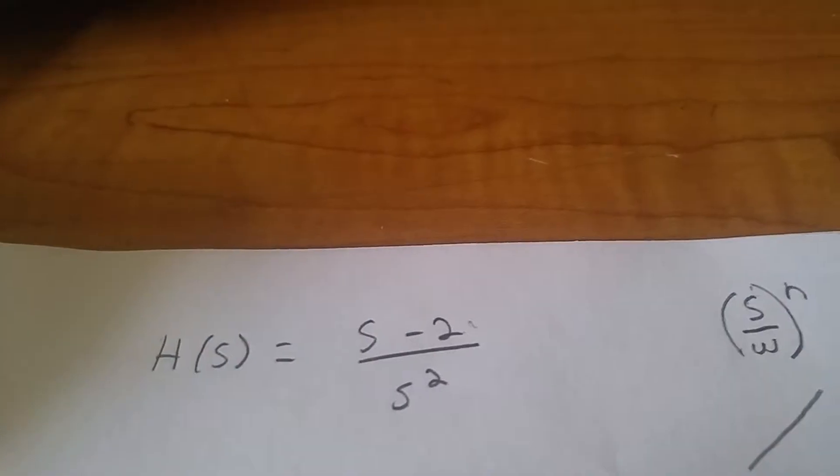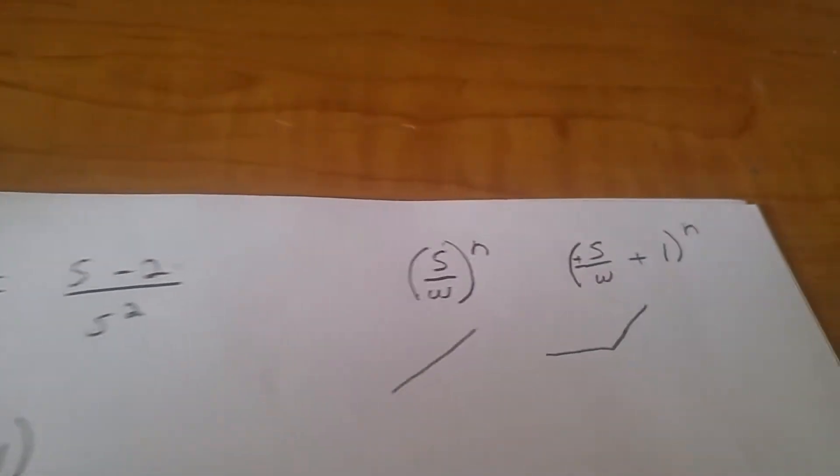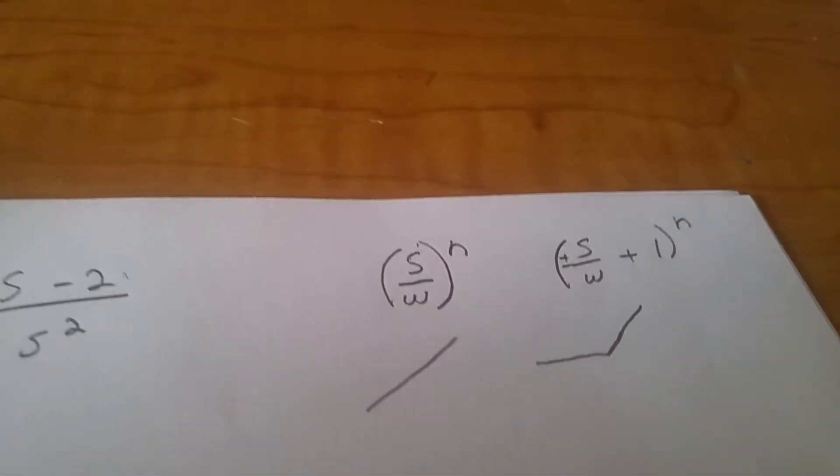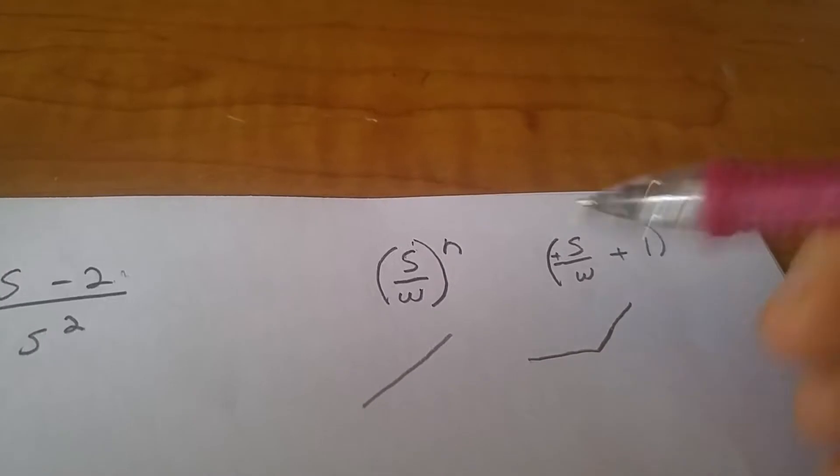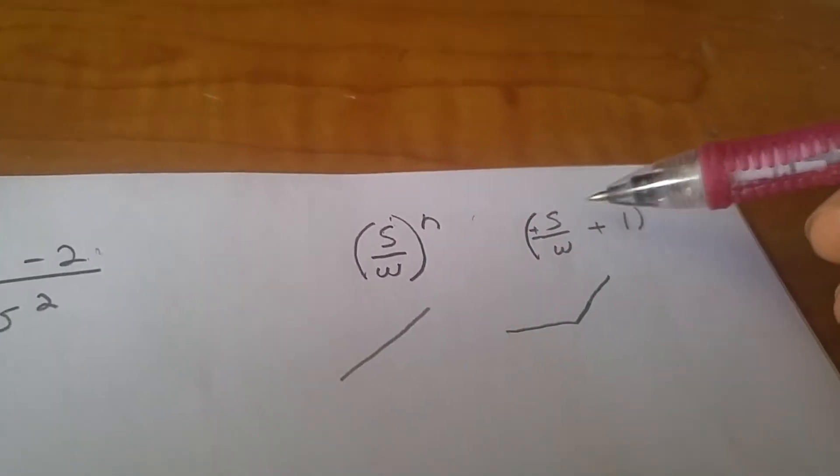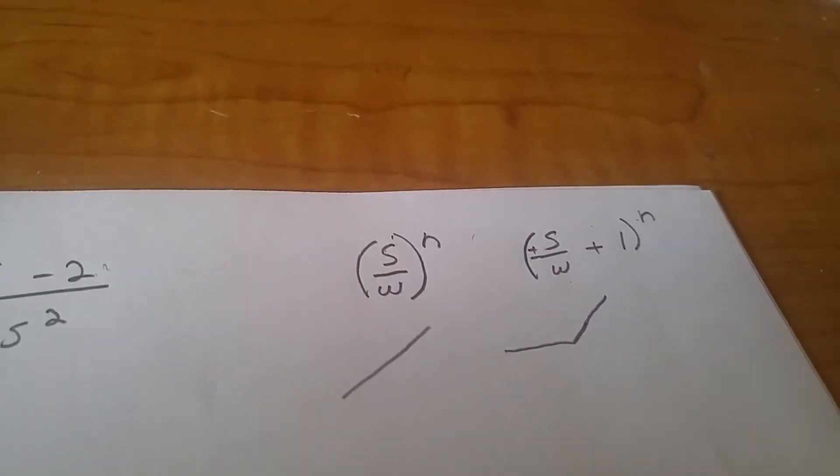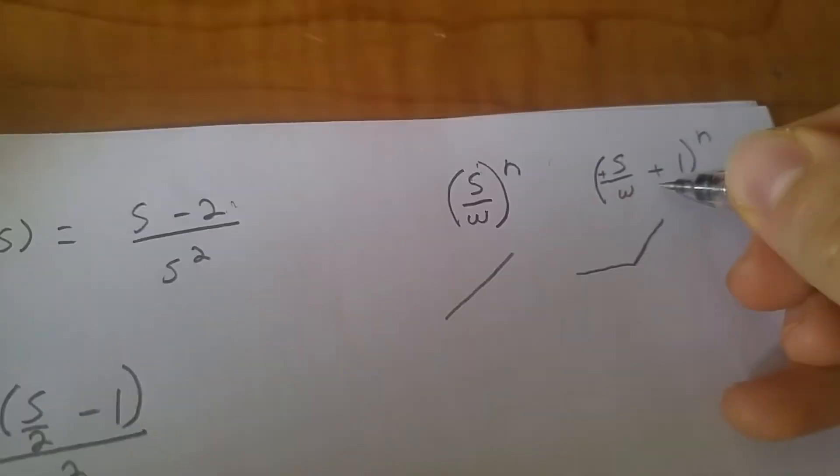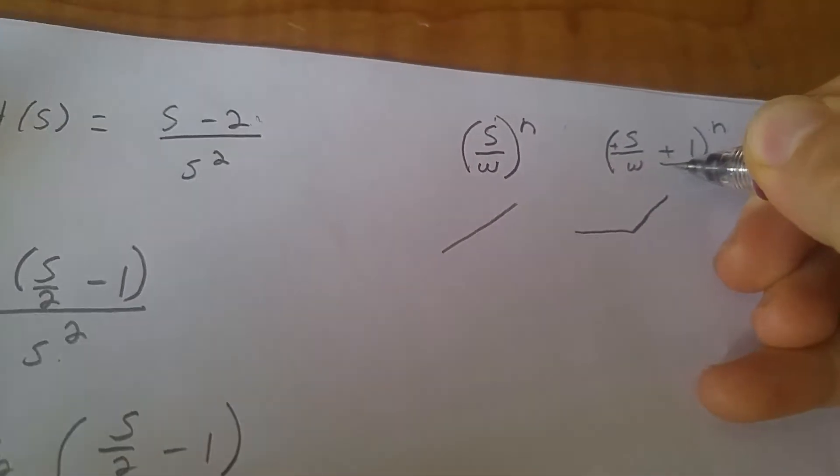So first, when you see this, you have to factor out the constant. And you're probably wondering, what constant? I don't really see a constant. Well, we know that with Bode diagrams we want to get it into this form. We either want s over omega to the n power or s over omega plus one to the n power. This could be plus or minus one. That doesn't affect the magnitude at all.